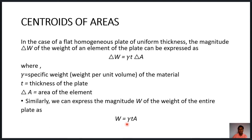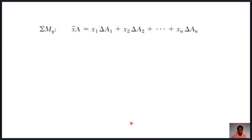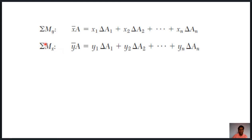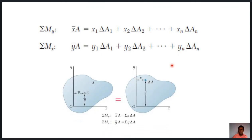Similarly, the total weight of the plate is W = γ·t·A. Substituting these expressions into the moment equations, we get x̄·A = x₁·δA₁ + x₂·δA₂ + ... + xₙ·δAₙ, and similarly ȳ·A = y₁·δA₁ + y₂·δA₂ + ... + yₙ·δAₙ. We have now converted the plate into an area by neglecting the z-axis and the thickness. The position of the center of gravity has distance x̄ from the y-axis and ȳ from the x-axis.